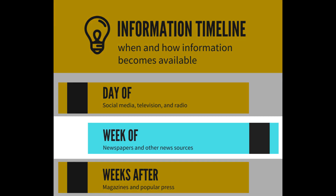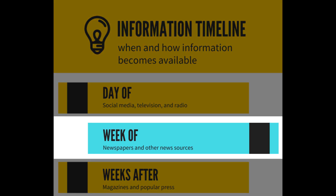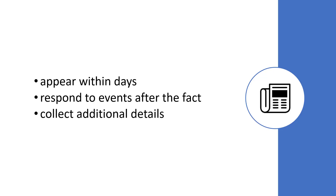Newspapers and other news sources can present information within days of a new topic appearing or an event taking place. These sources respond to events after the fact and invest the time to collect additional details, including statistics and quotes. Newspapers present more in-depth information and context in comparison to social media.